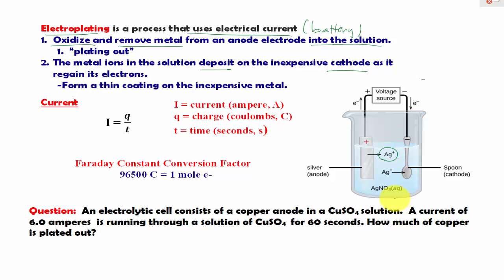If you look at this electrolytic cell, the electrons are removed from the anode as they travel through the wire, go through the electric current source, and will end up in the cathode. This is where the metal ions regain their electrons, and the metal ions will start to deposit onto the cathode.